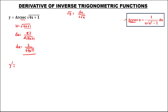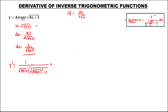Then to find the derivative, y prime, from this formula, we have 1 over u — and u is square root of 4x plus 1 — times the square root of 4x plus 1 quantity to the power 2, minus 1, times the derivative of u, then over the square root of 4x plus 1. Then simplify.